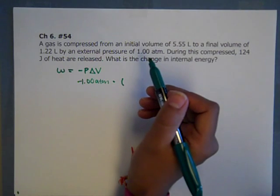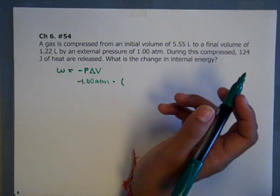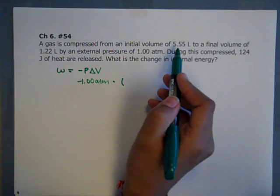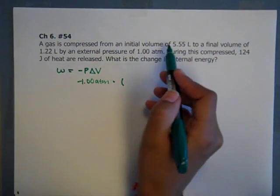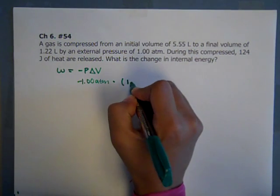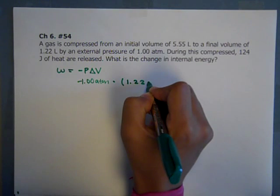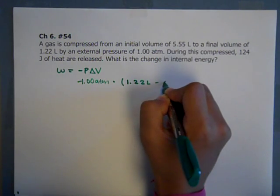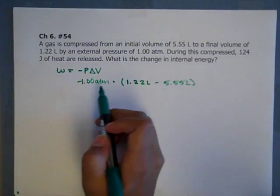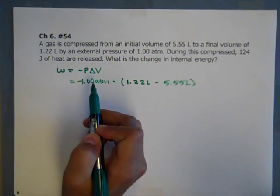So V final is 5.55, oh sorry, V initial is 5.55, so V final is 1.22 liters minus 5.55 liters. And so that is how we're going to get our work.